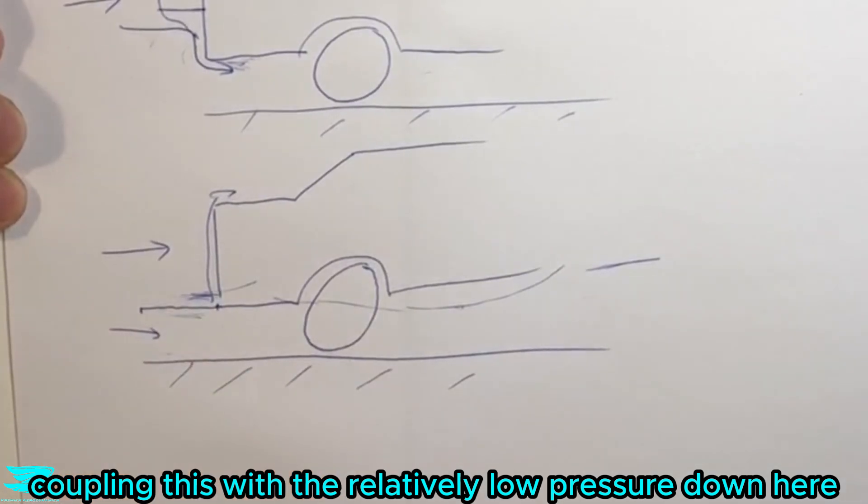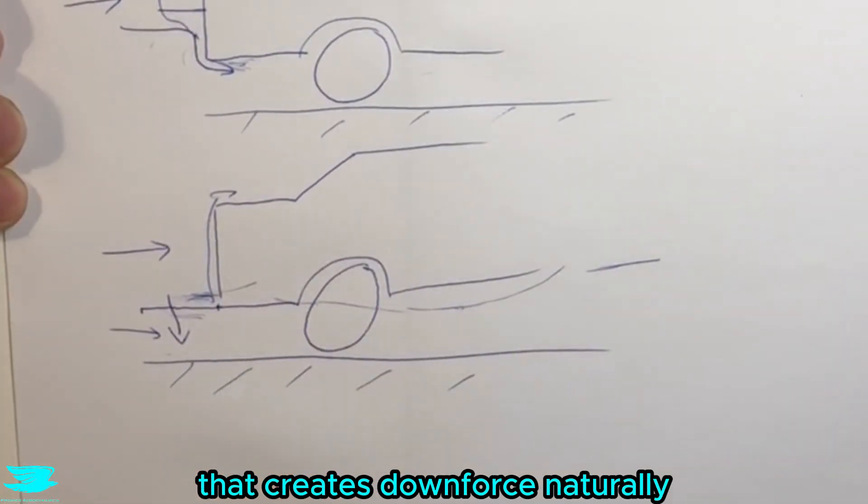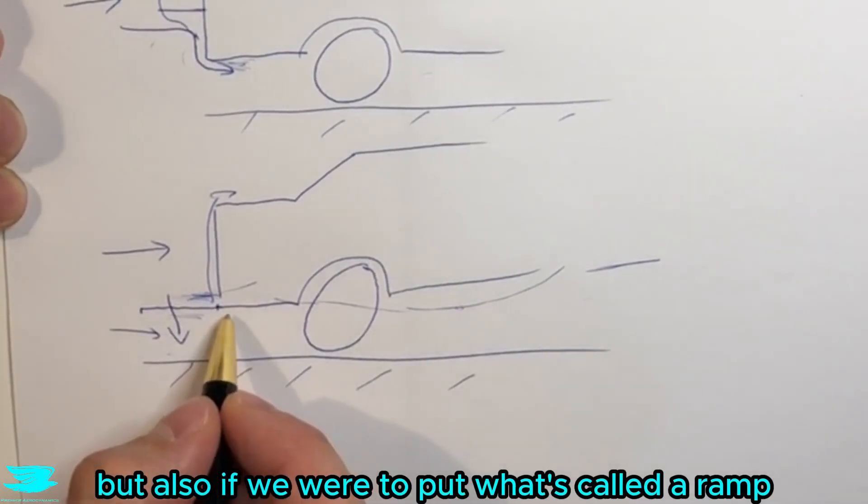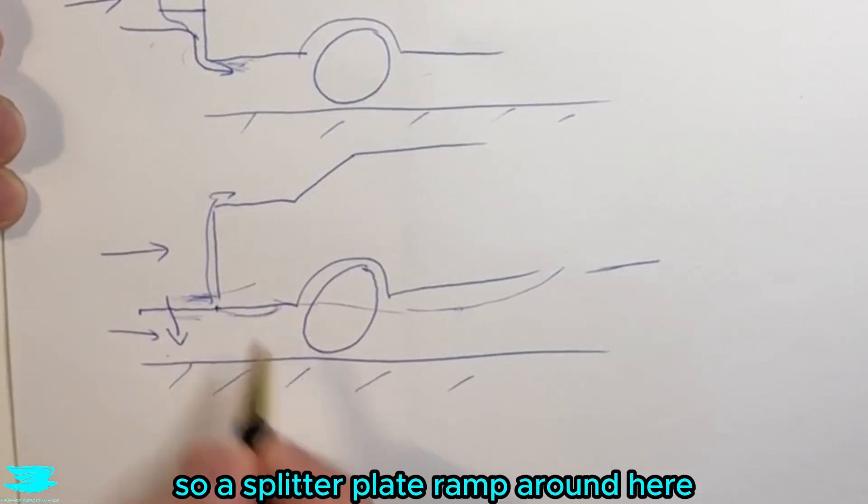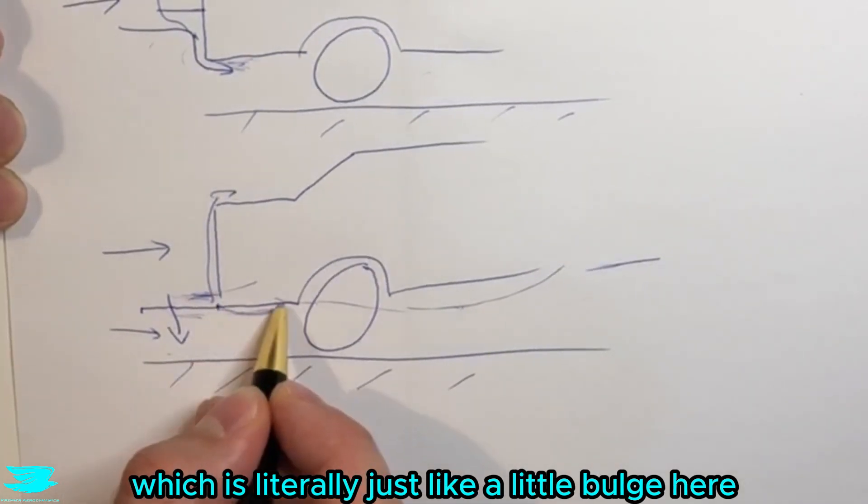That creates high pressure here. Couple this with the relatively low pressure down here, that creates downforce naturally. But also, if we were to put what's called a ramp, so a splitter plate ramp around here, which is literally just like a little bulge here.